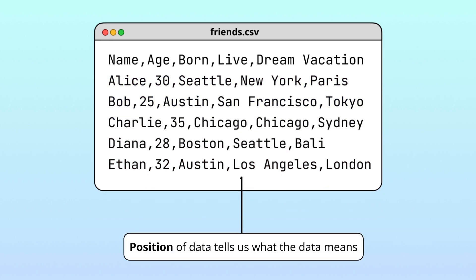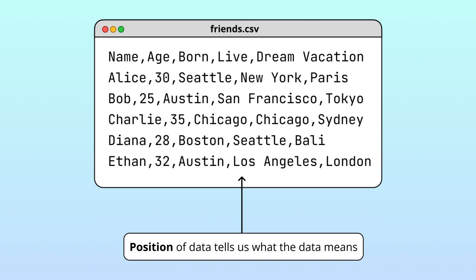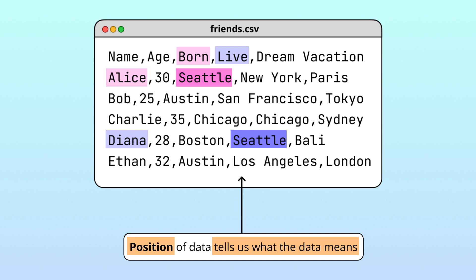The position of a given piece of data tells us what the data means. For example, the value Seattle occurs twice in this file. In Alice's row, Seattle is the city she was born. But in Diana's row, Seattle is the city where she currently lives. The position of Seattle within the file tells us what it means.